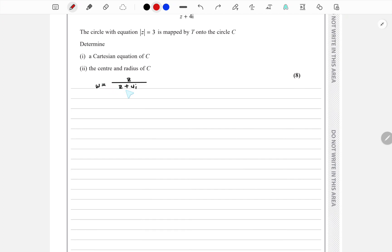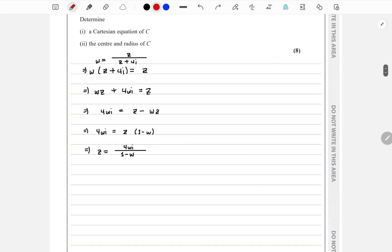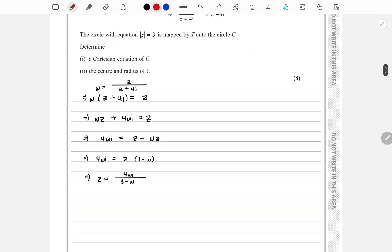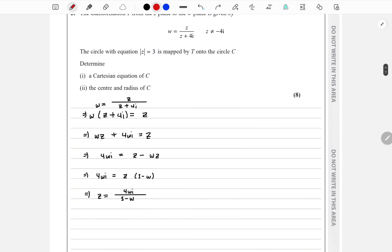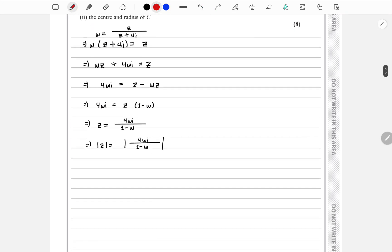Then we put the Z's on the same side, take Z common, and then we get Z. Now we can apply the Z equals to 3.